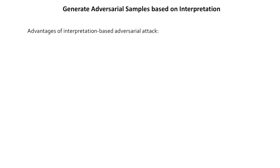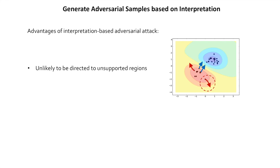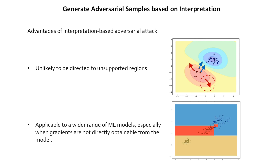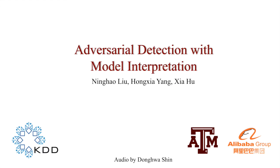The advantages of using interpretation are twofold. First, we can avoid attacks being directed to the wrong direction, which may happen if we use attack methods based on local gradient. Second, our method can be applied to different types of machine learning models, especially decision trees or ensemble models where gradients may not be directly obtainable. Make sure to check our paper for more details. Thanks for watching.